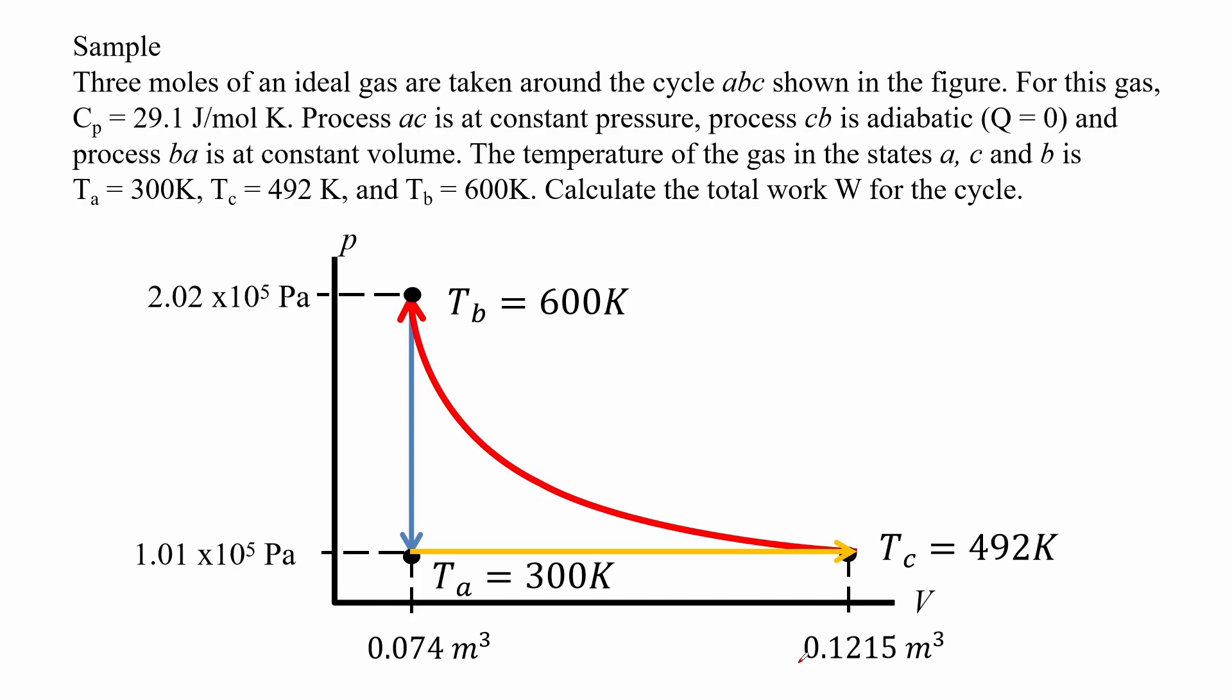Here we have an example. Three moles of an ideal gas are taken around the cycle ABC shown in the figure. For this gas, it has a molar heat capacity at constant pressure equal to 29.1 Joule per mole Kelvin.